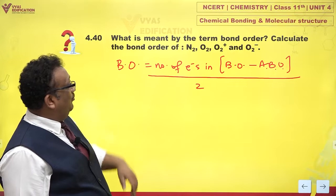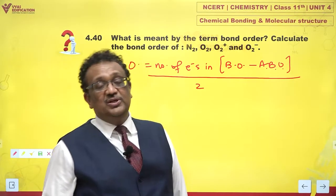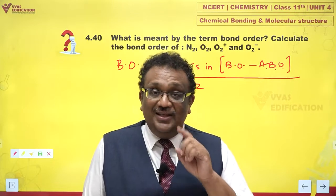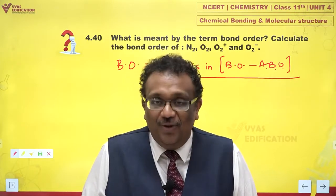Can we calculate the bond order of N2, O2, O2 plus and O2 minus? Yes, we can. What do we need to do? First thing, we need to write down their electronic configurations.